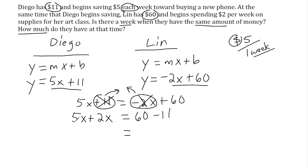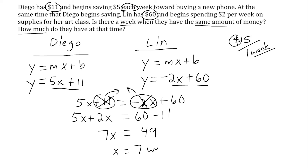We now have two like terms on the left that we can combine: 5x plus 2x gives us 7x. On the right-hand side, 60 minus 11 is 49. Using mental math, we know that 7 times 7 is 49, so x equals 7 weeks.